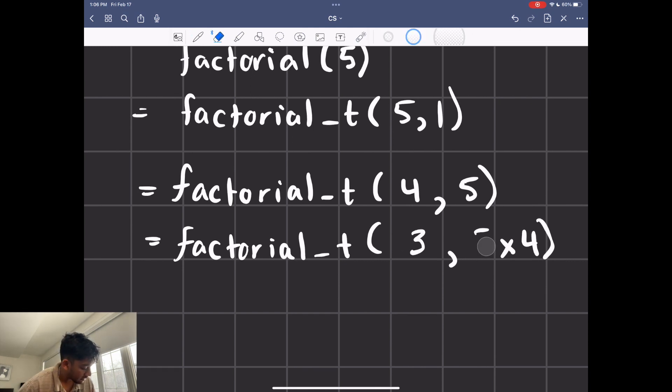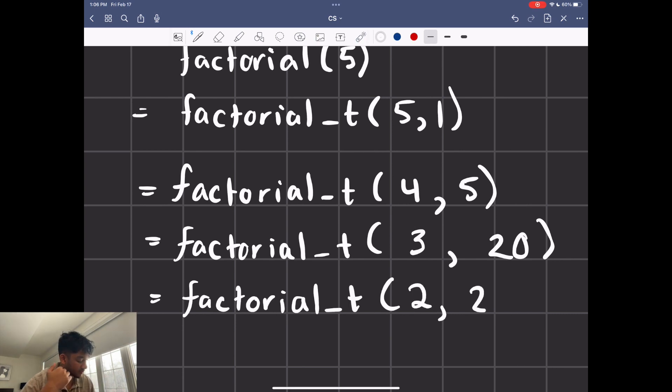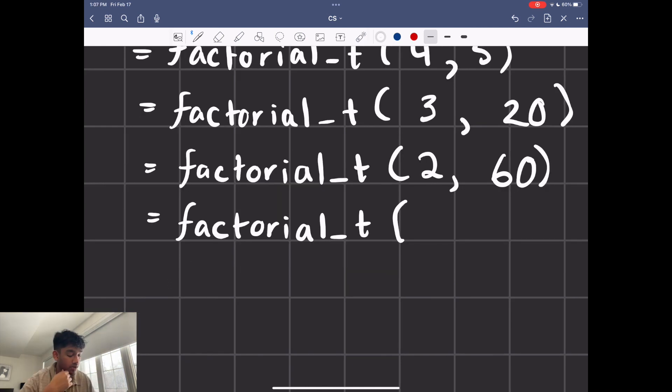So this is going to be 3. And then this is going to be 20. Finally, this becomes 2. And this becomes 20 times 3, which is just 60. We're going to call factorial_t one last time because n is still 2. But in this next case, it's going to be 1. And then we're going to do 60 times n, which is 2 in this case. So it's going to be 120.